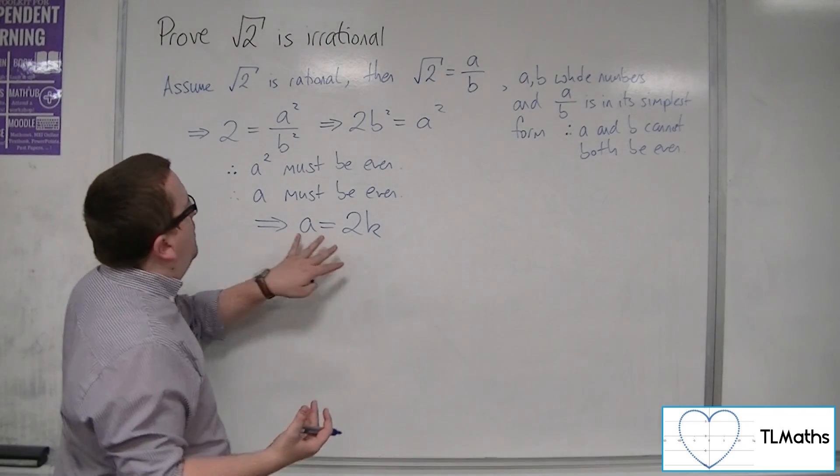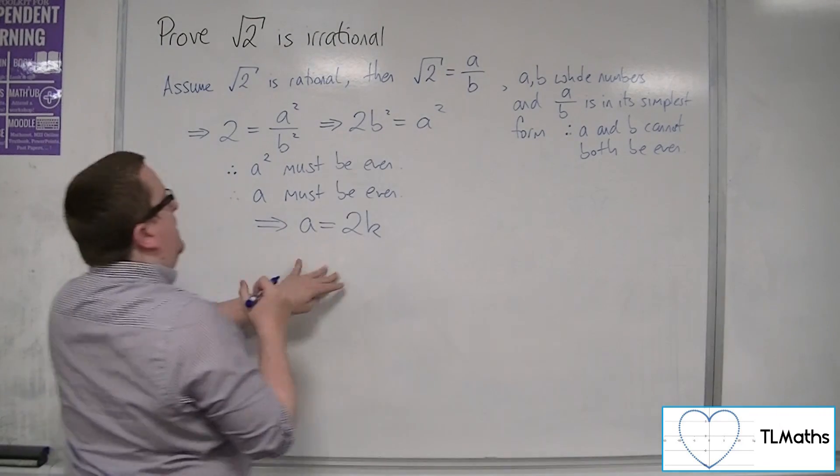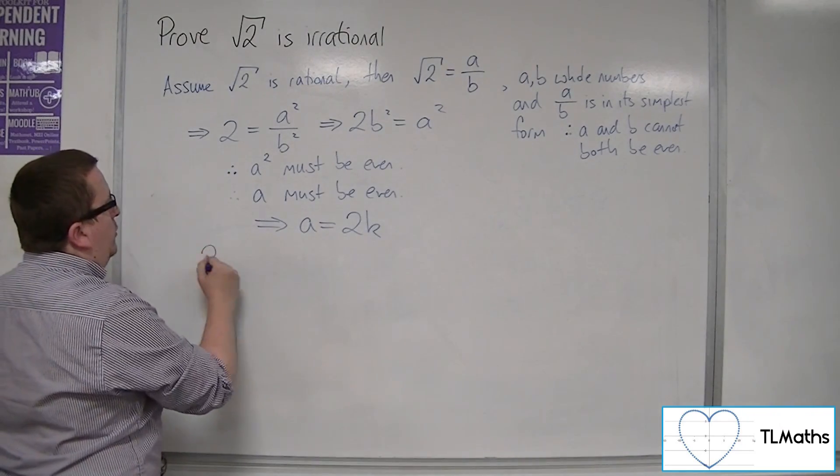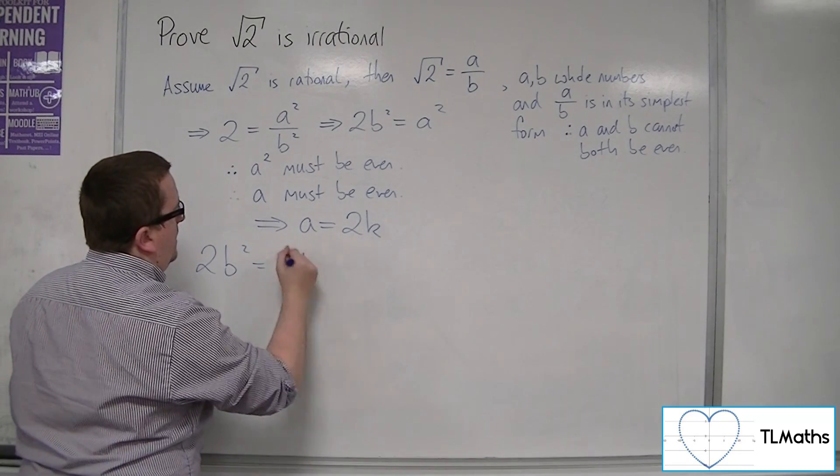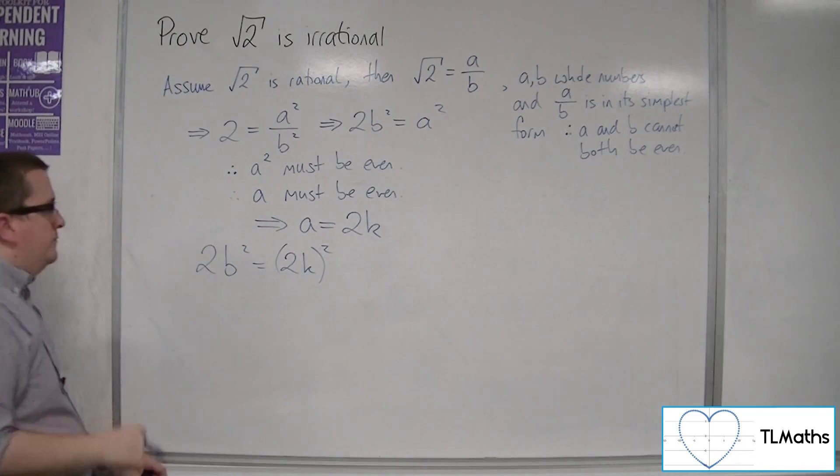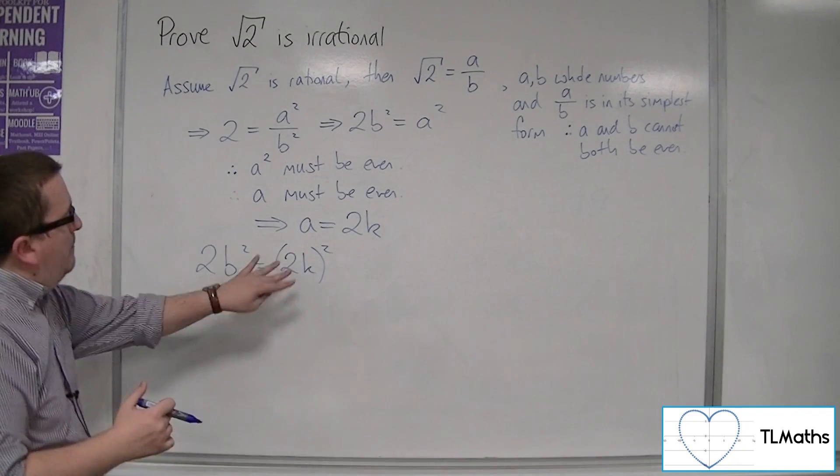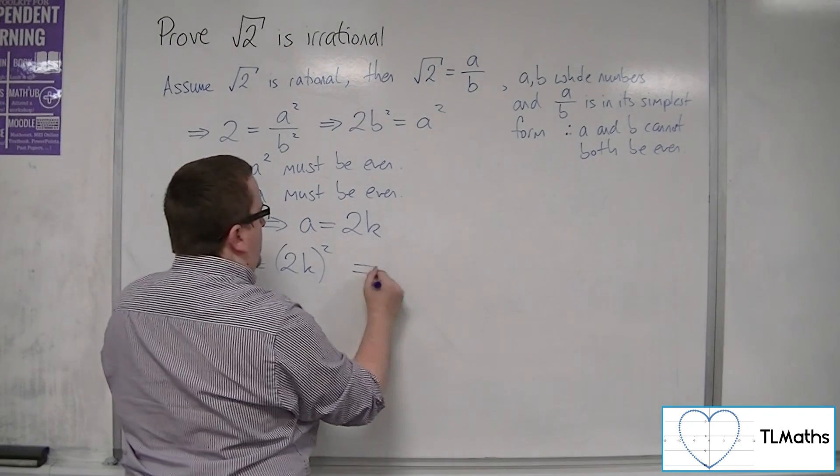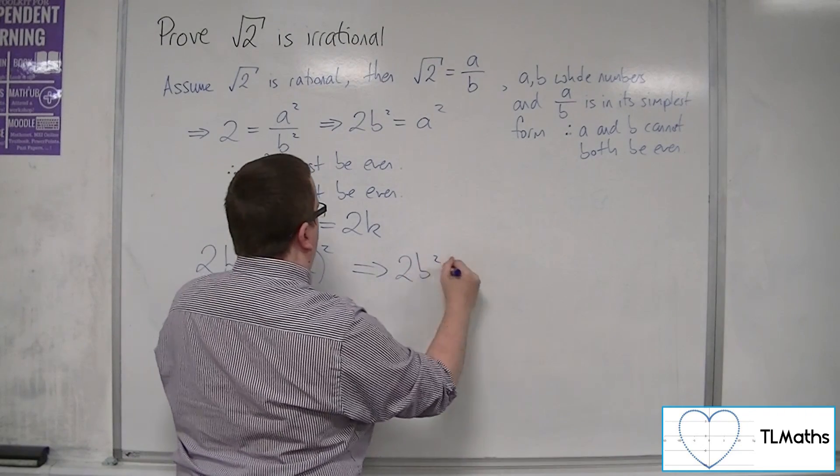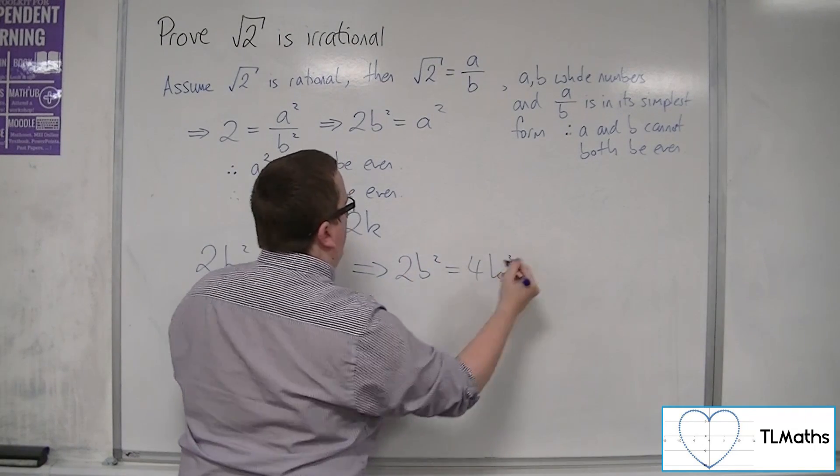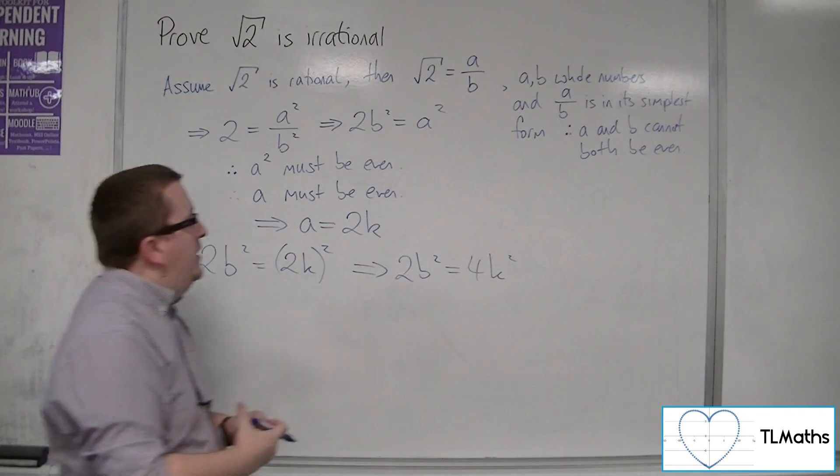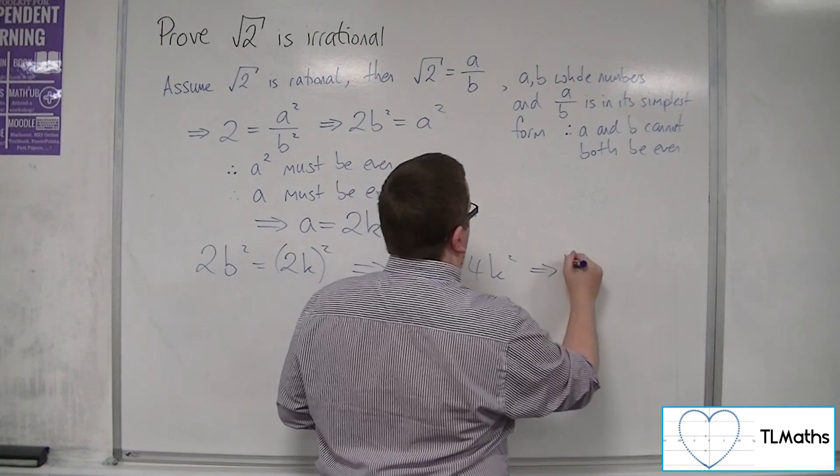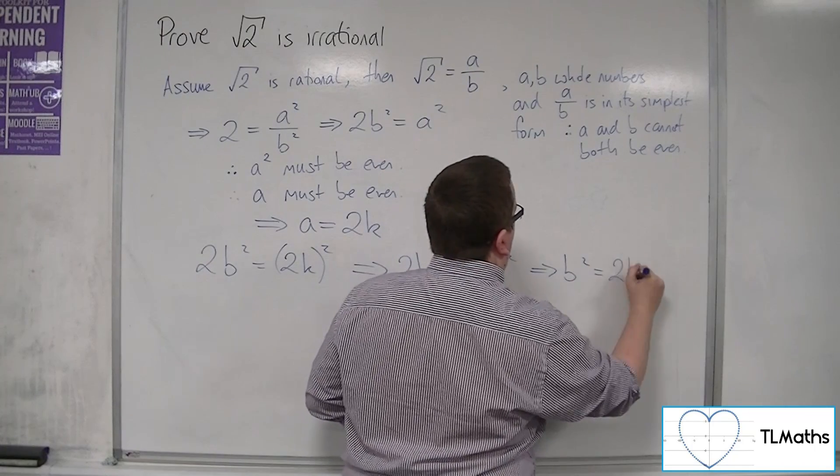So if I pop that into there, that will give me 2b squared is equal to 2k squared. All right, so that means I can square that. So I can write that as 2b squared is 4k squared. And then I can divide both sides by 2. So b squared is 2k squared.